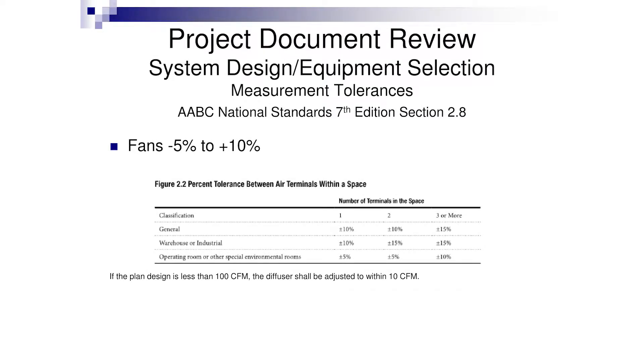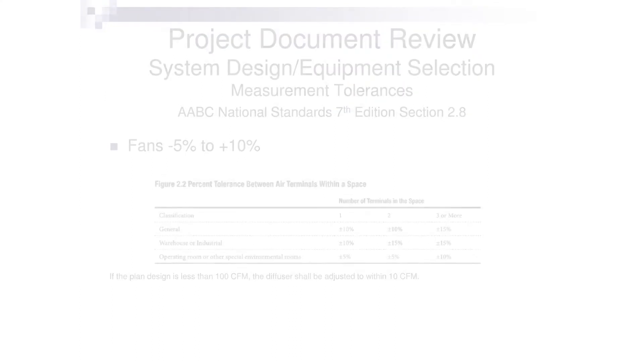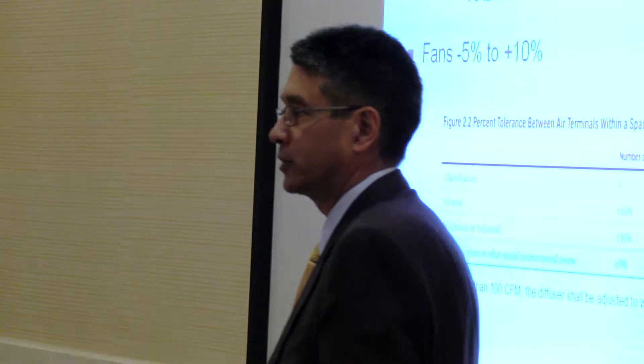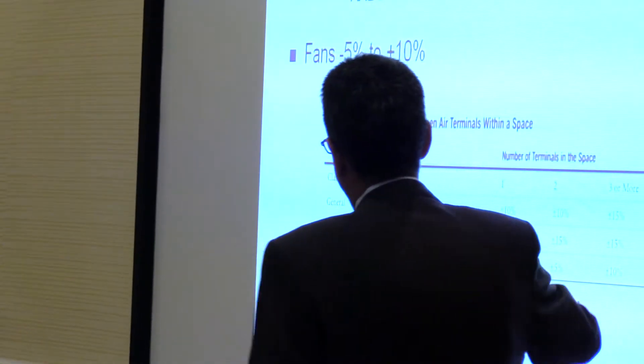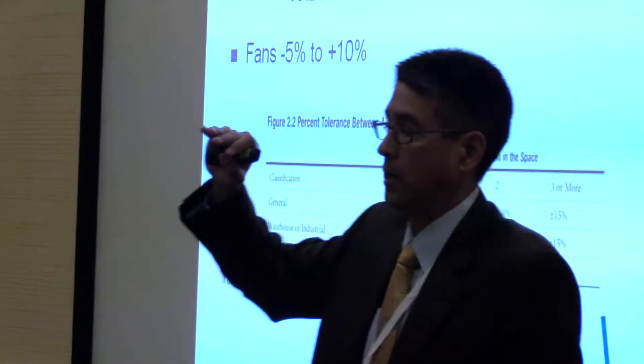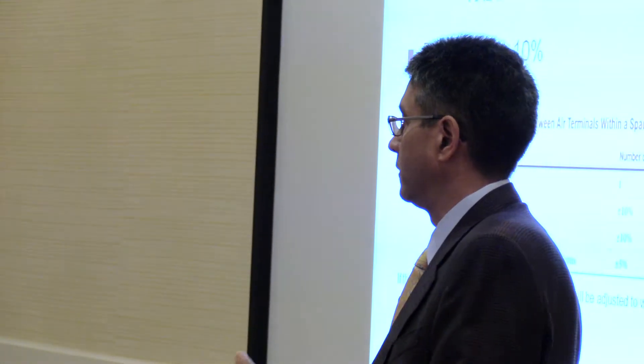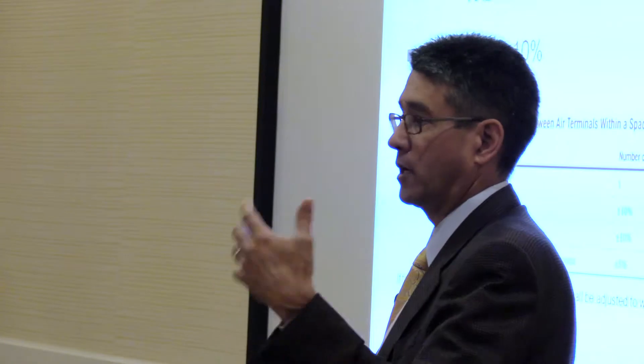For operating rooms and critical rooms, everybody likes to go back to plus or minus 5%. Even the AABC new edition says plus or minus 5% for operating rooms and special environmental rooms with two or three outlets, and there's already a revision cycle on that. It's really going to be predicated by the building envelope or room envelope — the looser the envelope, the more airflow you'll need; the tighter the envelope, the less airflow you'll need, as long as you maintain your air changes.